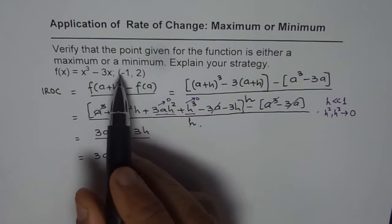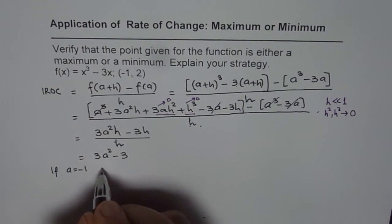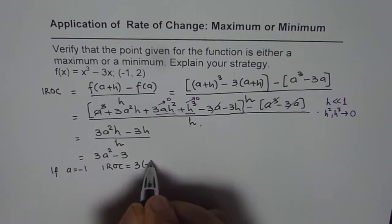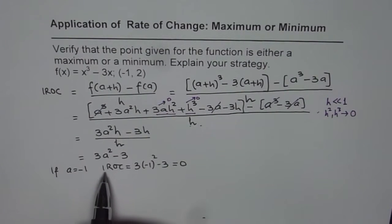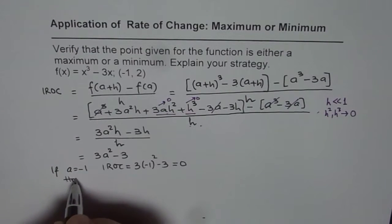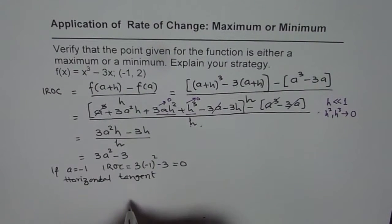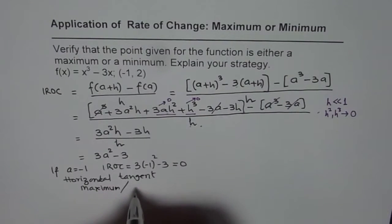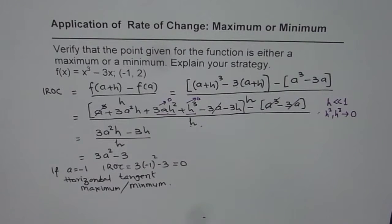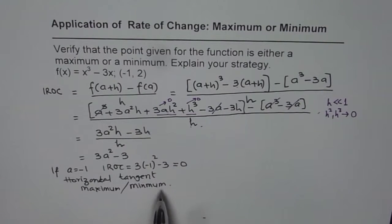Now, what is the instantaneous rate of change at a = -1? If a = -1, then it is 3 × (-1)² - 3, which is 3 - 3 = 0. Since the instantaneous rate of change is 0, that means we have a horizontal tangent. A horizontal tangent at a point implies either a maximum or a minimum. You'll also note that at a = 1, this is also 0, so we have a maximum or minimum at both +1 and -1.